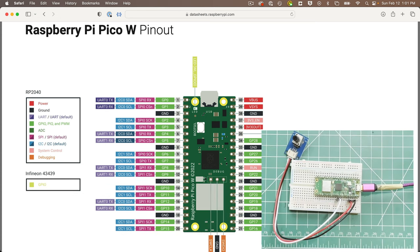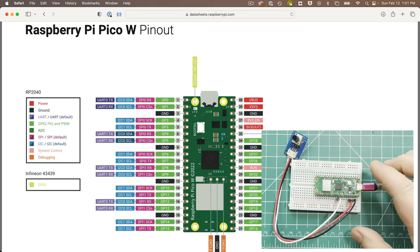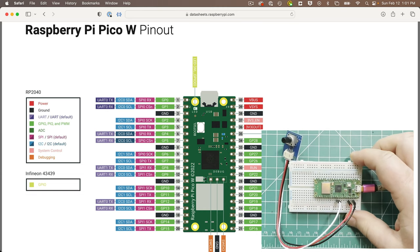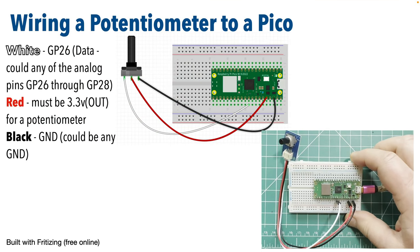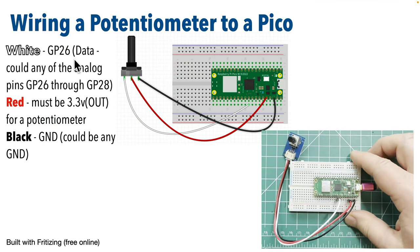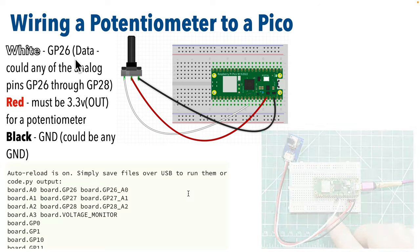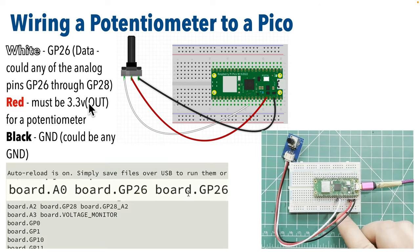Here's a potentiometer that I've wired up. I've wired the data input to GP26. If you check the result of the pinout script run on the Pico, we see that the GP26 pin has an alias of A0, which is an analog pin. Remember the analog pins are A0 through A2. As we learned in an earlier lesson with the Circuit Playground Bluefruit, I need to limit a potentiometer to 3.3 volts, so I've also wired power to the 3.3 volt out pin, and any ground pin works for the ground wire.